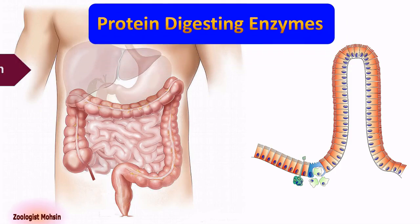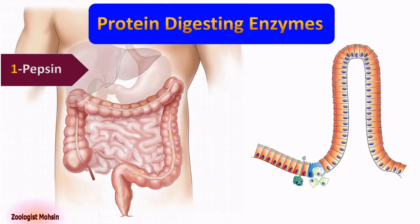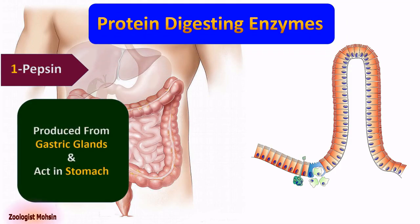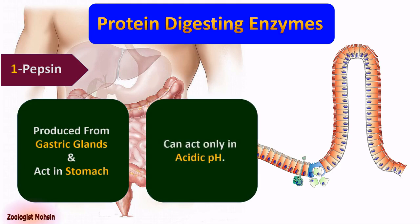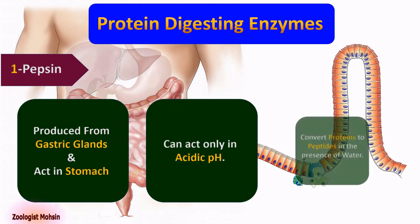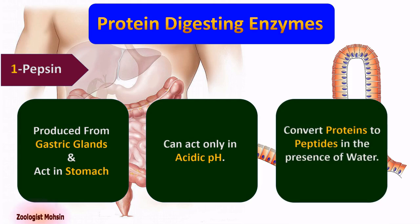Protein-digesting enzymes. Number one: pepsin. Pepsin is produced from gastric glands and acts in the stomach. Pepsin can act only in acidic pH, that is less than 7. It converts proteins to peptides in the presence of water. Remember that pepsin converts proteins to peptides, not amino acids.